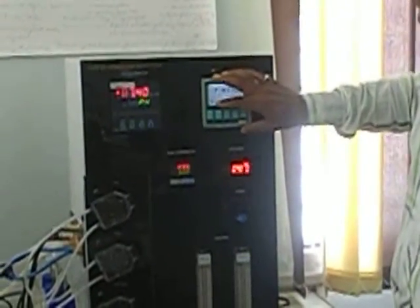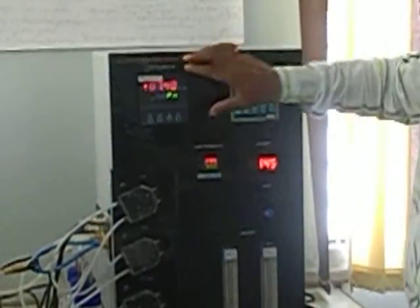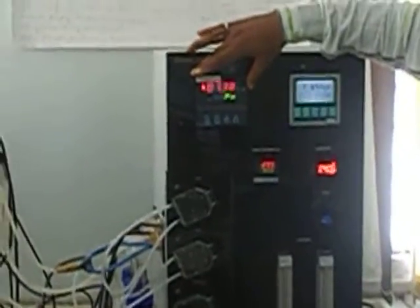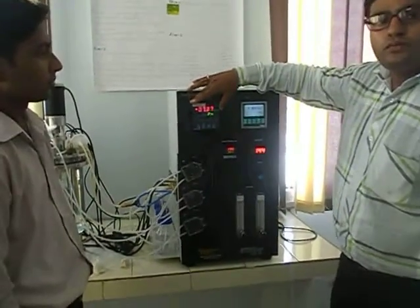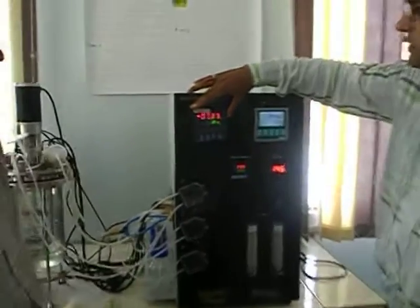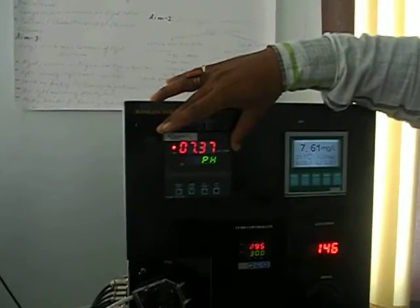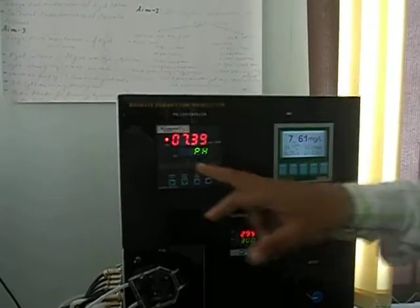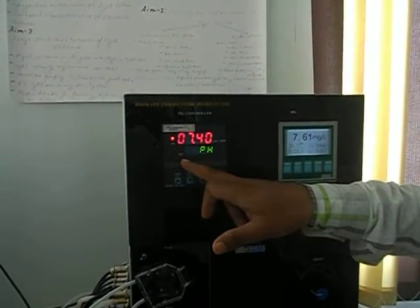Next is the pH controller. We have the 0 to 14 pH range. This is the process value and this is the set value.